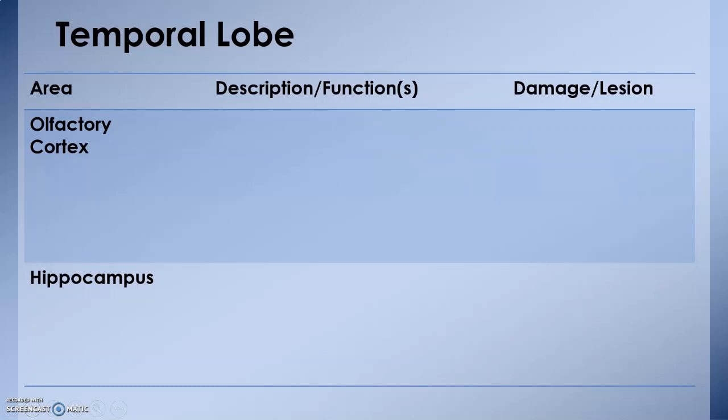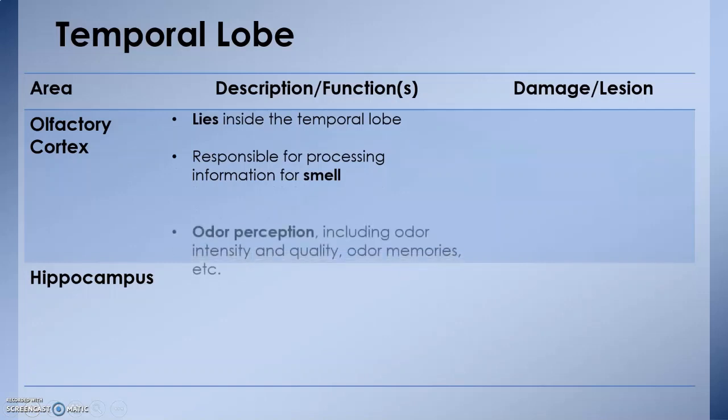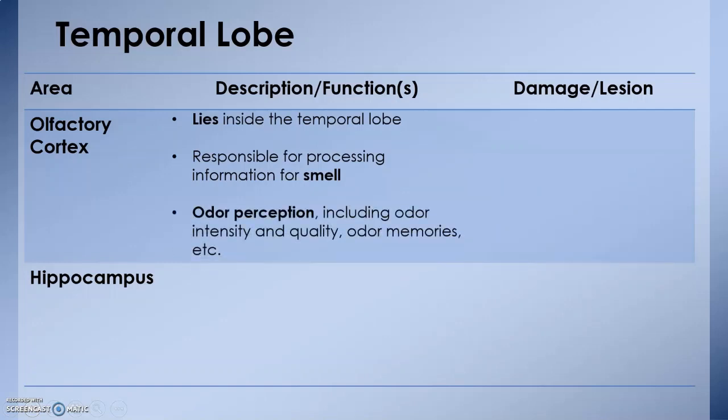Coming to the next important region in the temporal lobe: the olfactory cortex. The olfactory cortex is a very important part of our olfactory system—that is, our sense of smell. It lies in the temporal lobe and is responsible for processing information for smell. It is also involved in odor perception, including odor intensity and quality, and even odor memories.